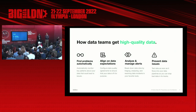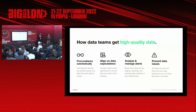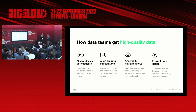Moving on to the platform. We think there are three main pillars needed to achieve good data quality. Starting with the first one: finding problems automatically. From a product perspective, you can take Soda, point it towards the data source, and we'll figure out what we can automatically. That includes things like schema changes, data freshness, and applying time series anomaly detection to key metrics like row counts.